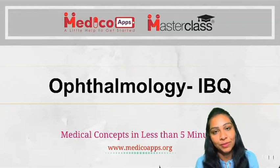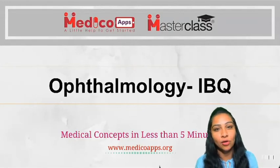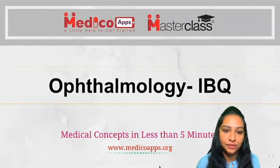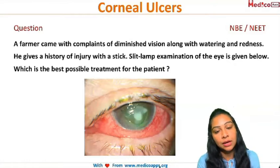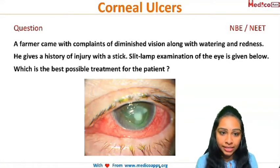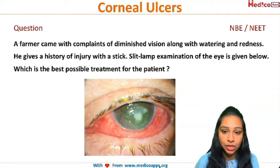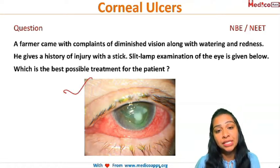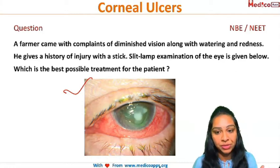Hello students, welcome back to Medico Apps. Today we'll have another interesting session on an image-based question in ophthalmology. A farmer has come to us with complaints of diminished vision along with watering and redness. He gives a history of injury with a stick, and slit lamp examination shows us an image like this. What is the best possible treatment for this patient?